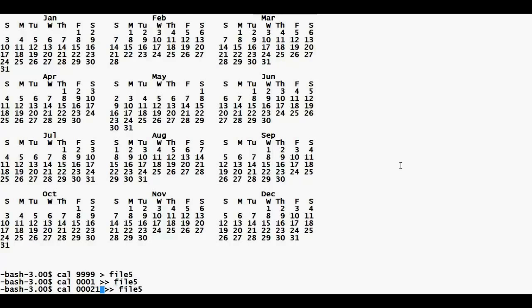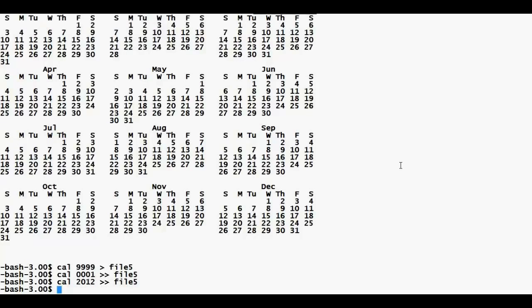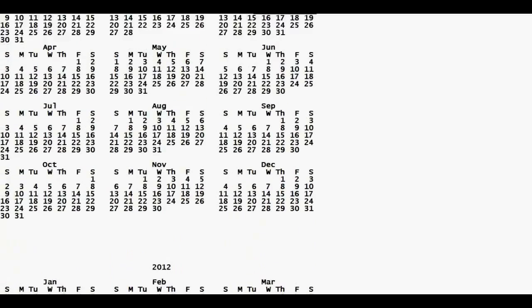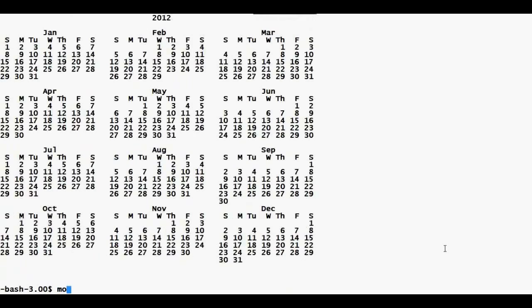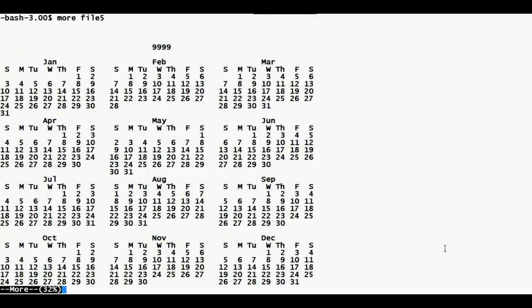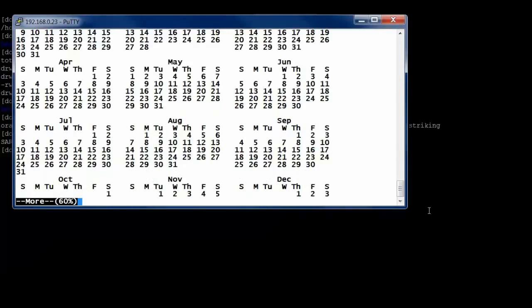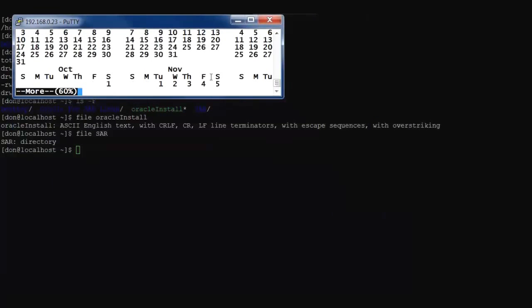I now have three calendars in that file. If I use 'cat file5' to view it, everything scrolls past and I can't read it easily. Instead I use the 'more' command — 'more file5' — which pauses page by page and shows what percentage I've viewed. I can also search within more: type slash, then 'dec' for December, and it jumps to that page.